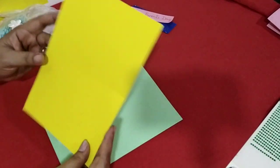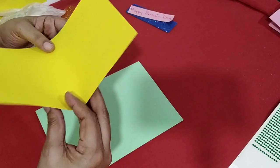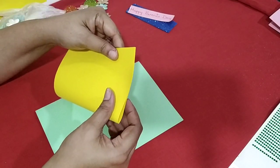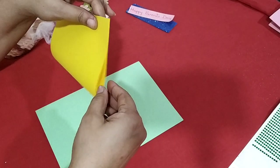Then you take another paper which is already cut in half and just fold it in the center and give it a pinch here. So you get the center.